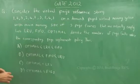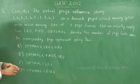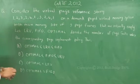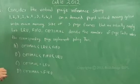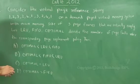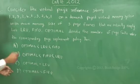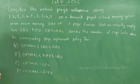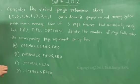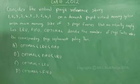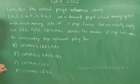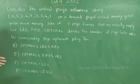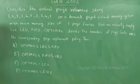Consider the virtual page reference string 1 2 3 2 4 1 3 2 4 1 on a demand-paged virtual memory system with main memory size of three page frames that are initially empty. Let LRU, FIFO, and Optimal denote the number of page faults under the corresponding page replacement policy. The options are: A) Optimal < LRU < FIFO, B) Optimal < FIFO < LRU, C) Optimal = LRU, D) Optimal = FIFO.